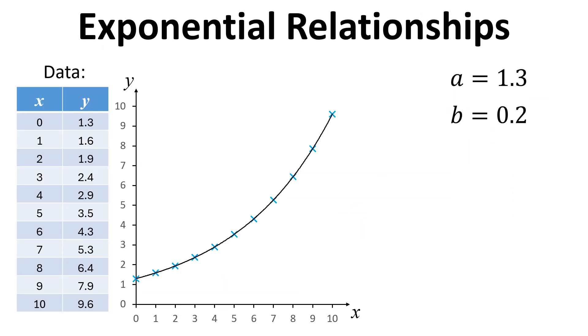Now we have that data for a and b, we can go back to the equation we started with, y equals a times e to the power of bx, put those numbers in, and we now have the equation for the exponential relationship. But we did it by first linearizing the data.